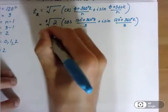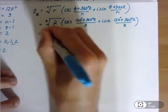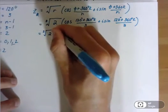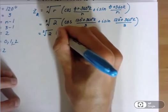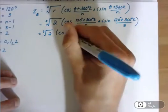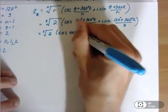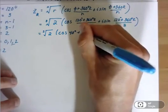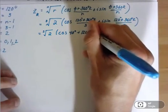I could clean this up a little more. So I have the cube root of 2, and this is going to be times cosine of 120 divided by 3 is 40 degrees, plus 360 divided by 3 is 120 degrees, k.